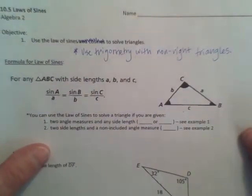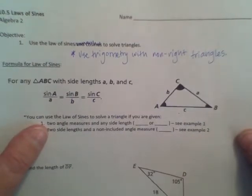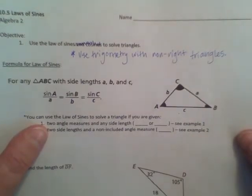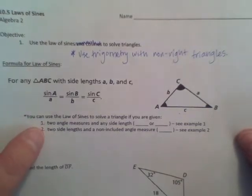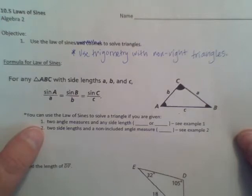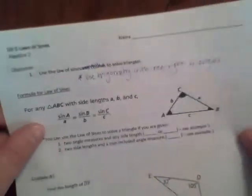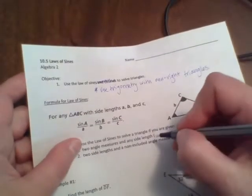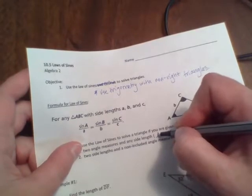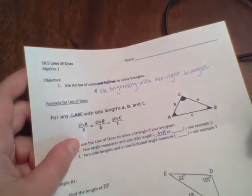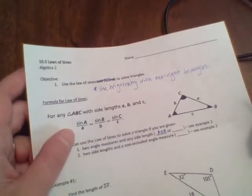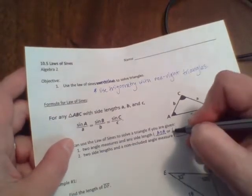So in that case, filling in each of our pieces here, you can use the law of sines to solve a triangle if you are given two angle measures and any side length. So if you remember back to geometry, when we talked about this, we are talking about technically angle-side-angle, two angle measures and a side length, or angle-angle-side.